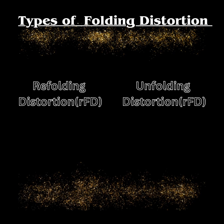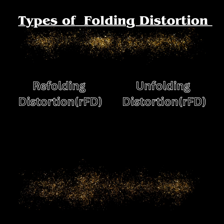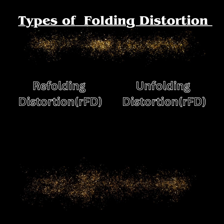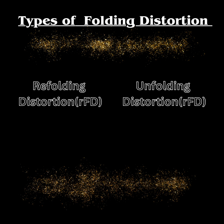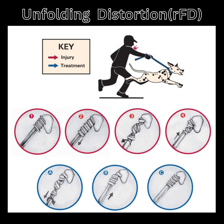There are two subtypes of folding distortions based on how the injury occurred. First, refolding distortion occurs when the fascia gets compressed and twisted, like in a fall on an outstretched arm. Second, unfolding distortion happens when the fascia overexpands and twists, getting stuck in an open unfolded state — such as when you're suddenly pulled in an unexpected direction, like by a dog on a leash.